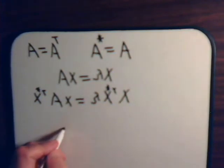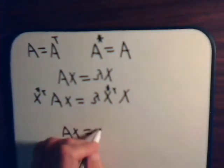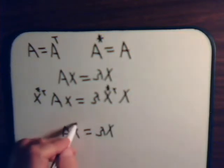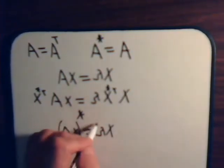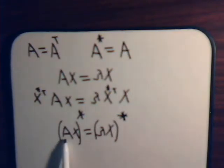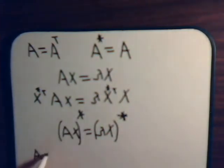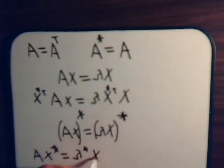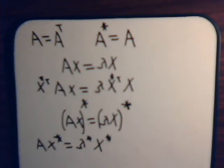Now let's go back to A x equals lambda x and take the complex conjugate of both sides. That will be the complex conjugate of matrix A — which has all real entries, so that's just A — times the complex conjugate of eigenvector x, equals the complex conjugate of lambda times the complex conjugate of the eigenvector. So we have this equation.